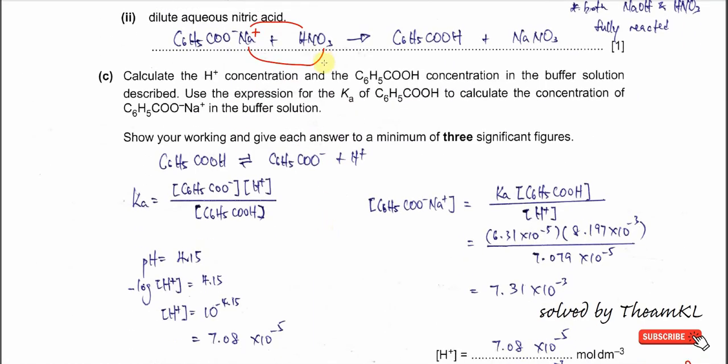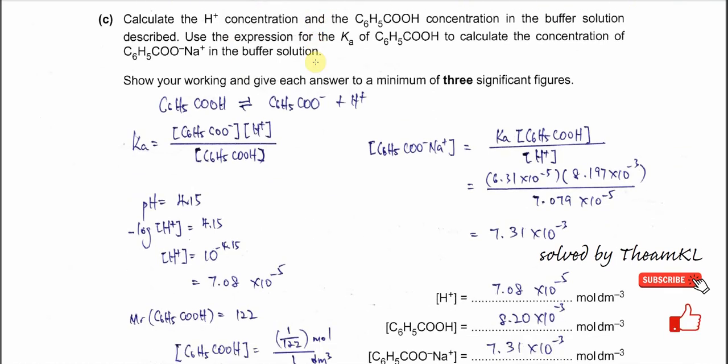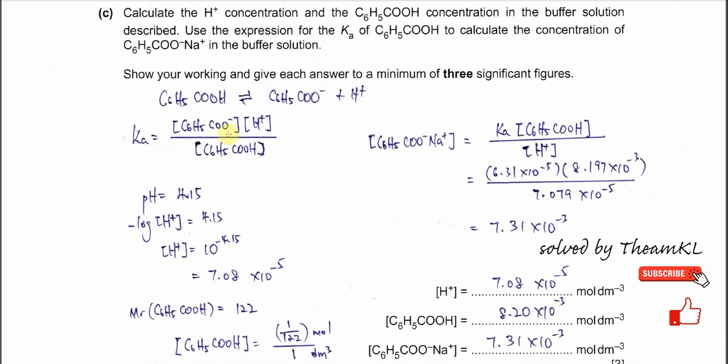For part C, calculate the concentration of hydrogen ion and the concentration of benzoic acid. After that, use the Ka expression of benzoic acid to calculate the concentration of sodium benzoate. Before you start the calculation, make sure you know how to construct the Ka expression. The benzoic acid dissociates to form the salt and H+. So it's the concentration of the salt times the concentration of H+ over the concentration of the acid.